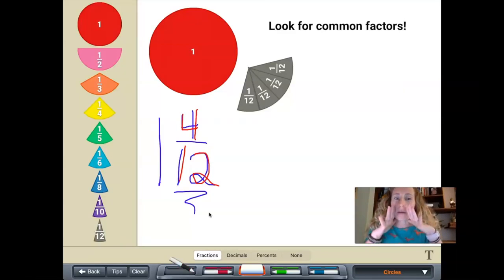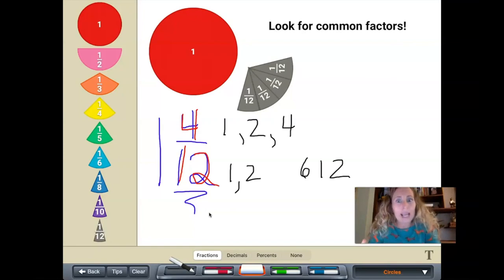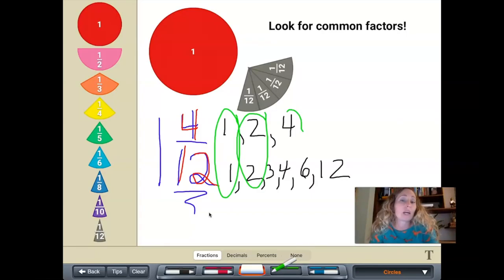This is why we're always harassing you about practicing those math facts. Some of you noticed right away what the greatest common factor is of these two numbers. But some of you might have to do a factor rainbow or find the factors of the number in order to see which factors these numbers have in common. They've got one, two, and four in common. And four is the greatest, the biggest factor that they have in common.